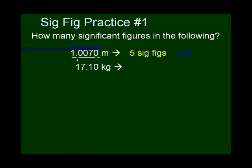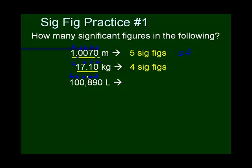17.10 kilograms: any number that's not a zero — the 1, the 7, and the 1 — count. It's a trailing zero with a decimal point, so that zero counts too. Total: four sig figs. For 100,890: the 1, 8, and 9 count. That sandwiches the two zeros, so they count. The last zero is trailing with no decimal point, so it doesn't count. Only five significant figures.